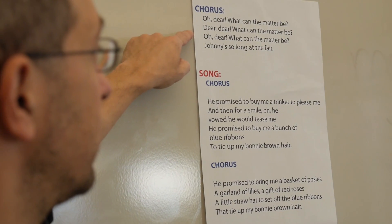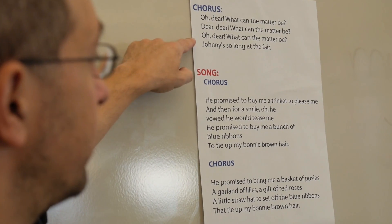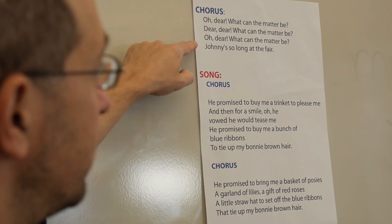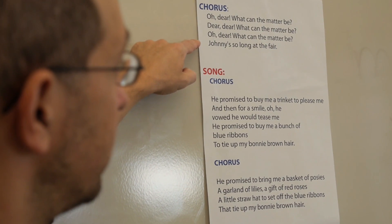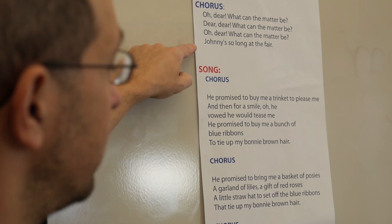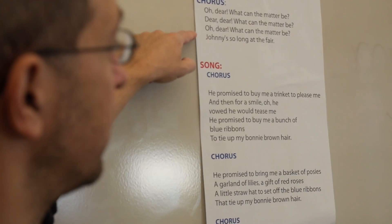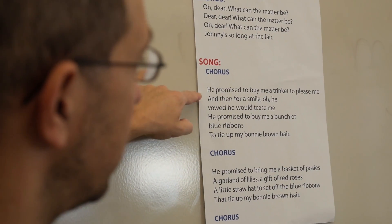In this lesson we define the chorus at the beginning of our song, then we sing through our song and notice that the class doesn't sing the word 'chorus' — they automatically go up to the top where we define the chorus and sing through that.